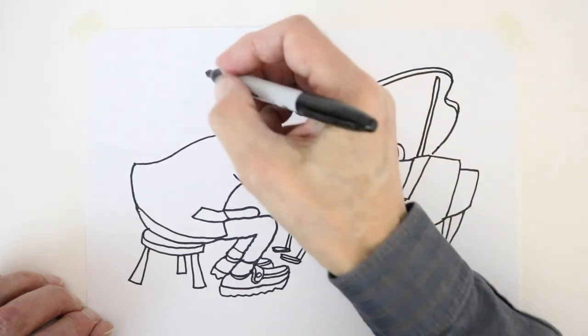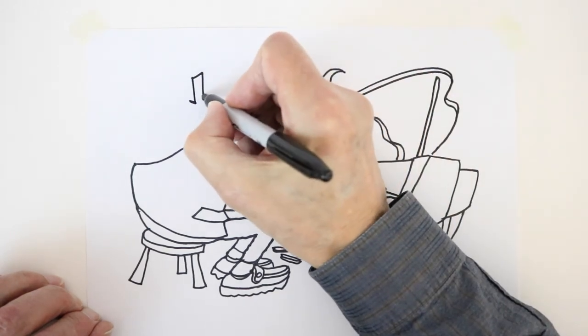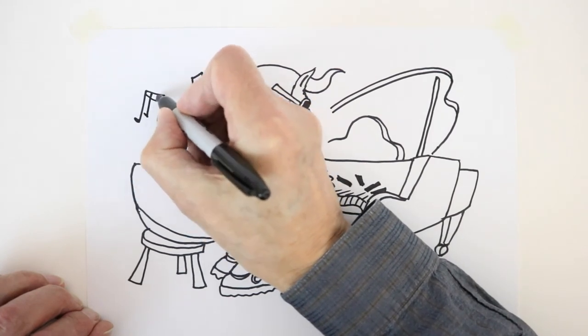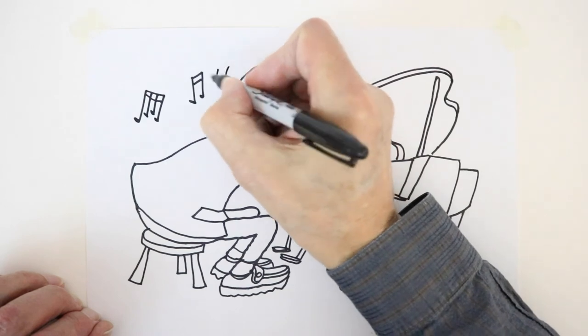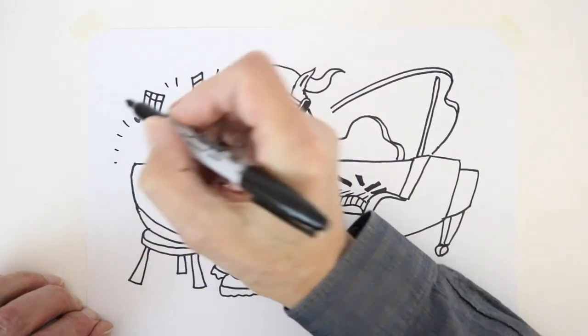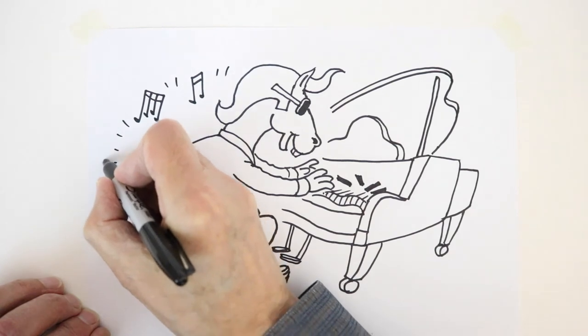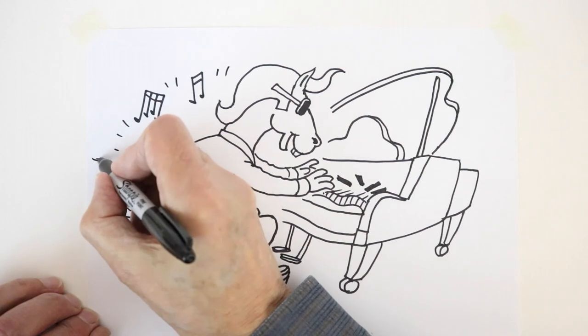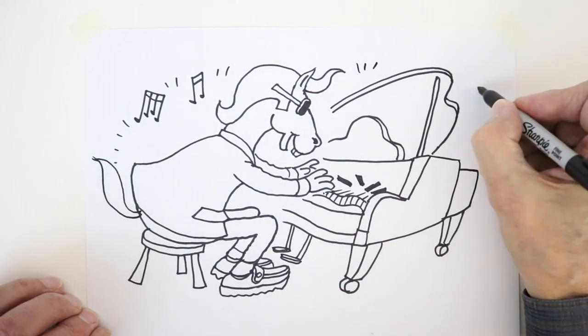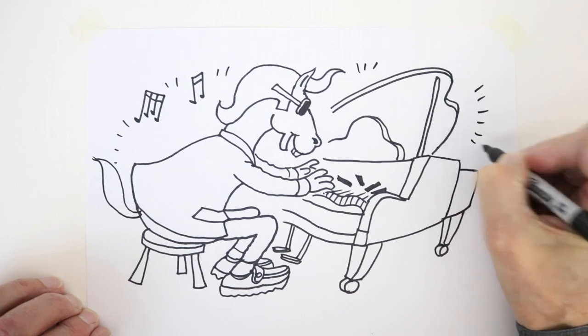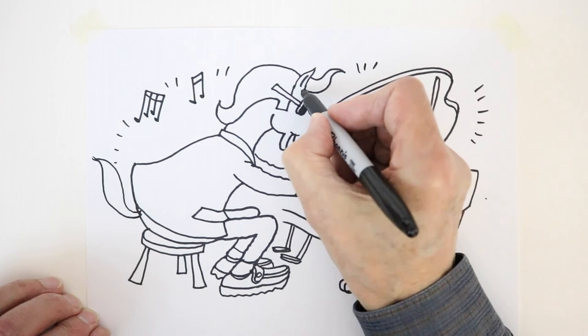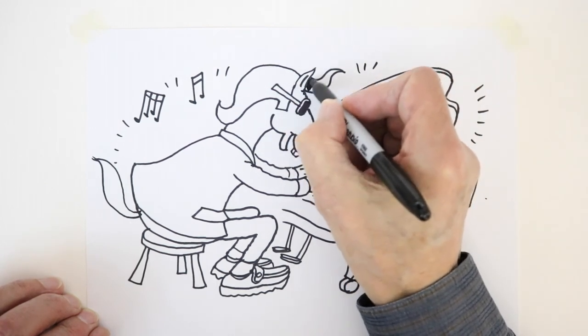And you can add to the sensation by putting in things like musical notes. Like that. And a few lines to suggest the music being pounded out. What we do now is fill in the dark shapes of his quiff and his hair.